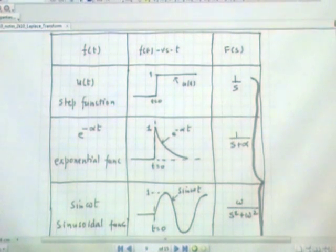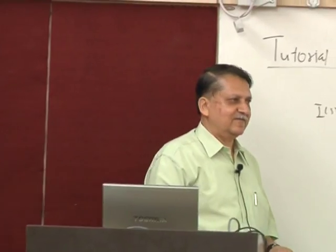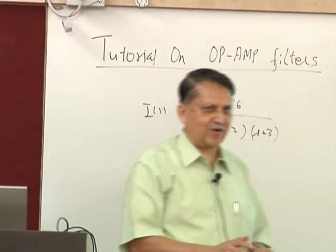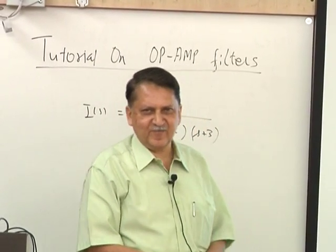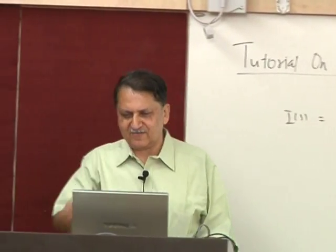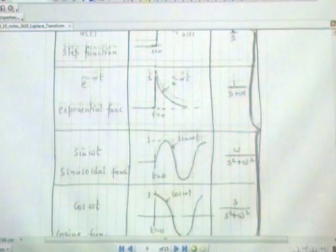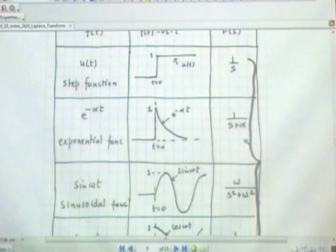We will be intelligent enough never to need that sinusoidal derivation by using the substitution S = jω. This is the Laplace transform table. At IIT we allow students to take a formula sheet into the exam hall because we do not believe in memorizing. We give two marks for a good formula sheet. This removes their fear of forgetting whether it is 1/(S + α) or 1/(S − α).